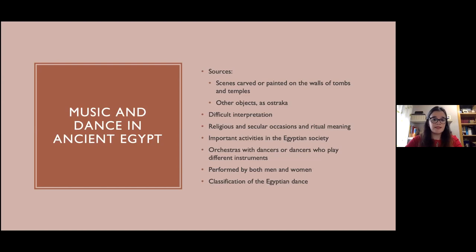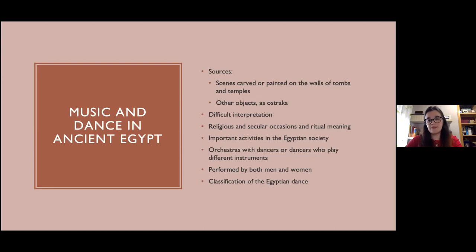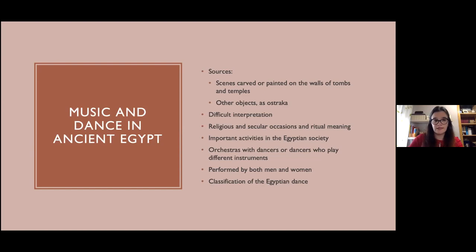Going back to dance, we can classify the ancient Egyptian dance according to the context in which it appears. A first group would be the dances performed during the banquets celebrated inside or near the tombs. A second one would be the dances performed during the funerary procession, which is the journey of the deceased from his house or the embalming place to the tomb. And the last one would join other dances, such as foreign dances, religious ones, or acrobatic dances.